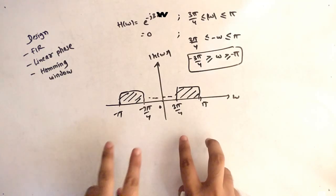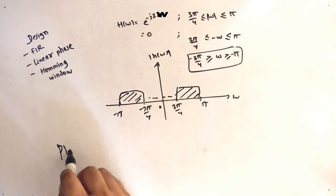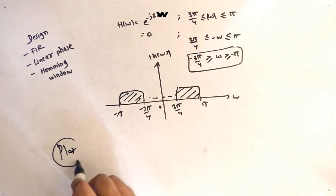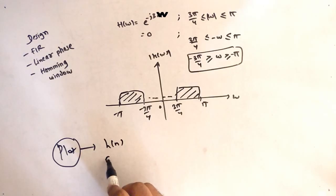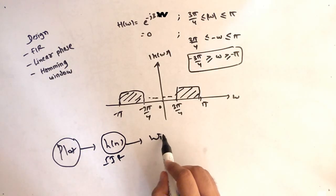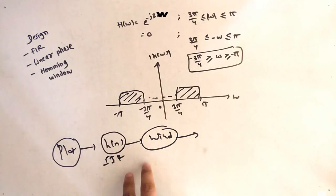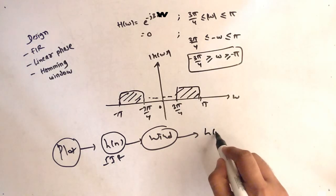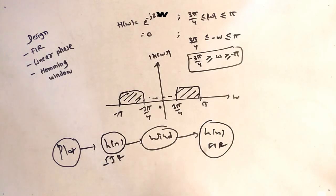This is a high-pass filter because for low frequencies it does not pass and for high frequencies it does pass. The first step is to plot the graph. The second step is to find h(n) for IIR, and then pass it through a window to get h(n) for FIR.